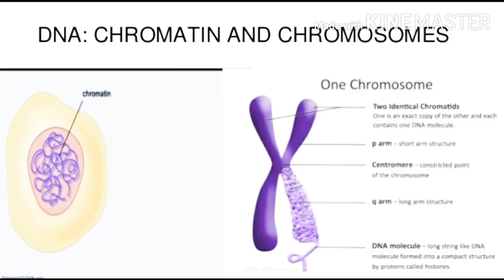Chromosomes are the condensed form of chromatin fiber. The genetic material present in our cells is in a fibrous form which we call chromatin. When it comes to cell division, these chromatin fibers get condensed, forming what we call chromosomes. This condensation of chromatin fibers into chromosomes occurs with the help of histone protein — we will see further in this chapter how chromatin fibers are condensed by histone protein.